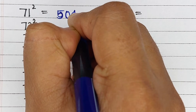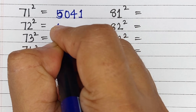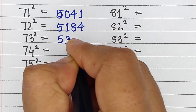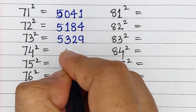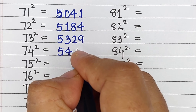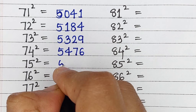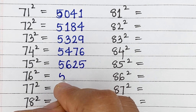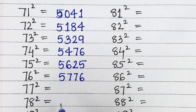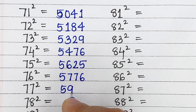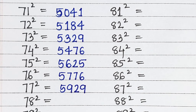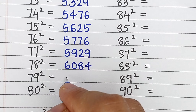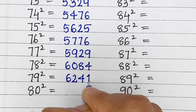Square of 71 is 5041, square of 72 is 5184, square of 73 is 5329, square of 74 is 5476, square of 75 is 5625, square of 76 is 5776, square of 77 is 5929, square of 78 is 6084, square of 79 is 6241.